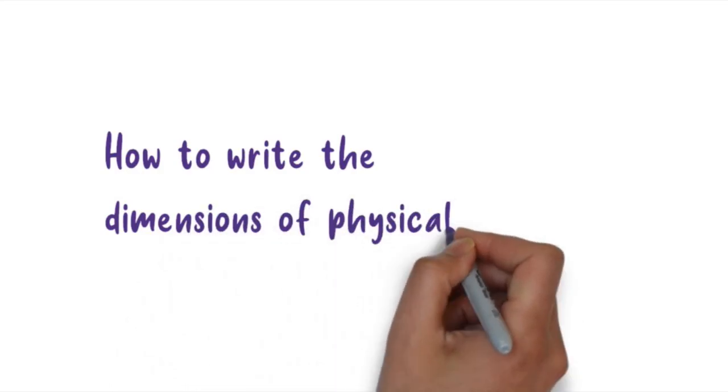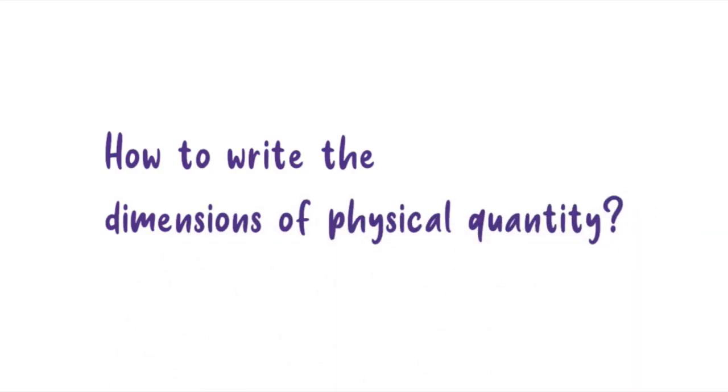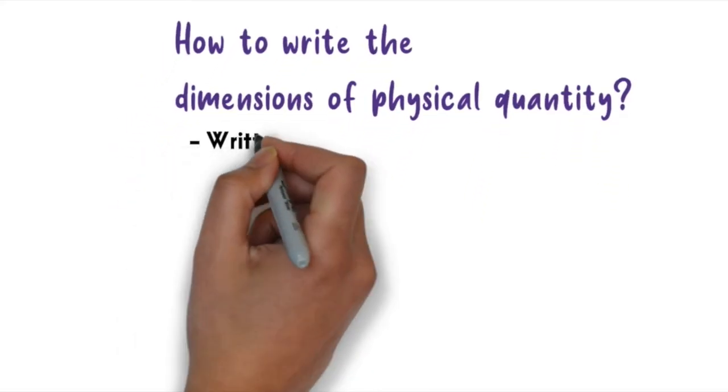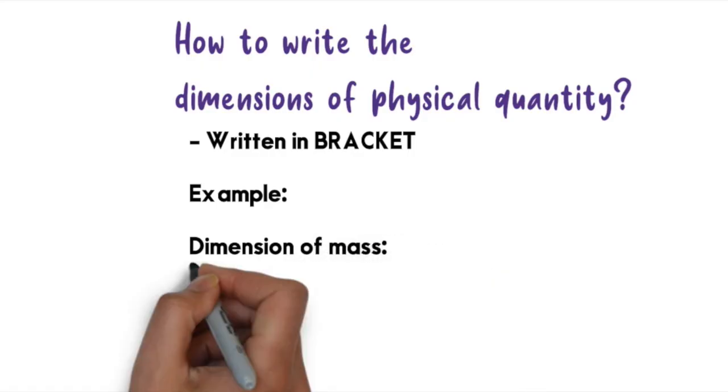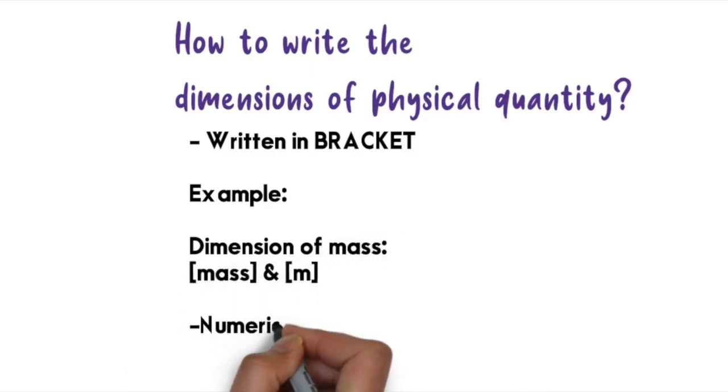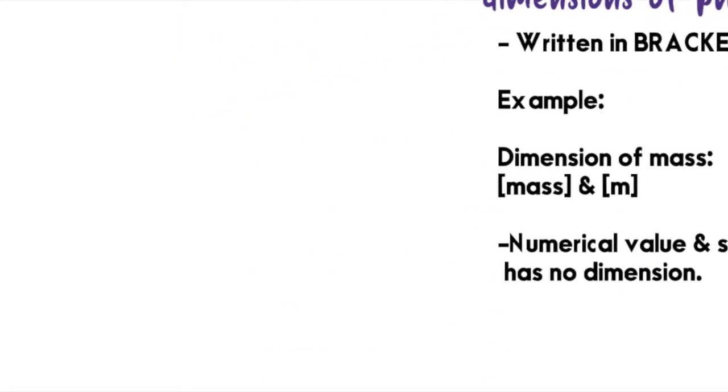So how to denote or write the dimension of physical quantity? There are few conditions that we need to remember. The first one is to write it in a bracket and numerical value and symbols have no dimension.